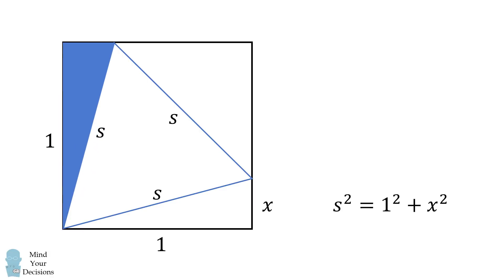Now consider the following right triangle. Its hypotenuse is also equal to s, and one of its legs is equal to 1. Therefore, its other leg must also be equal to x.